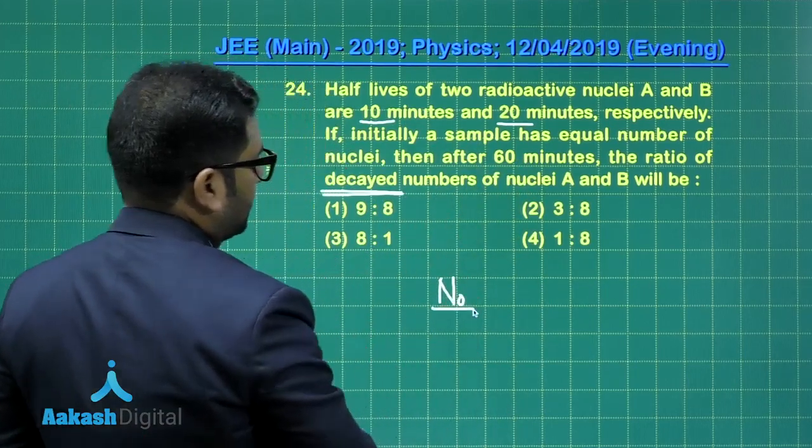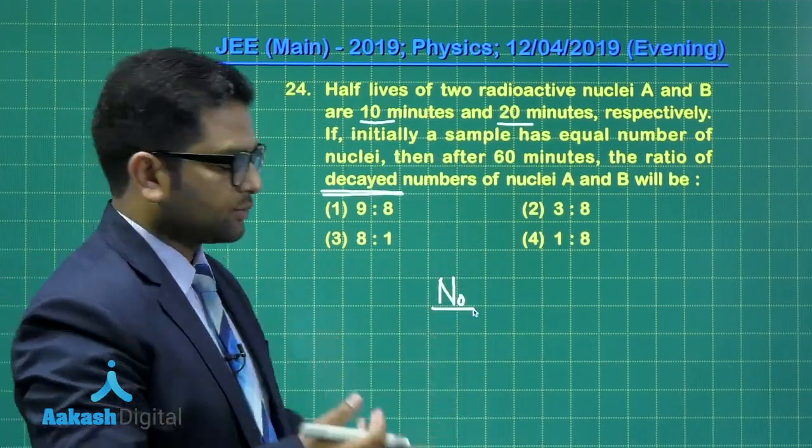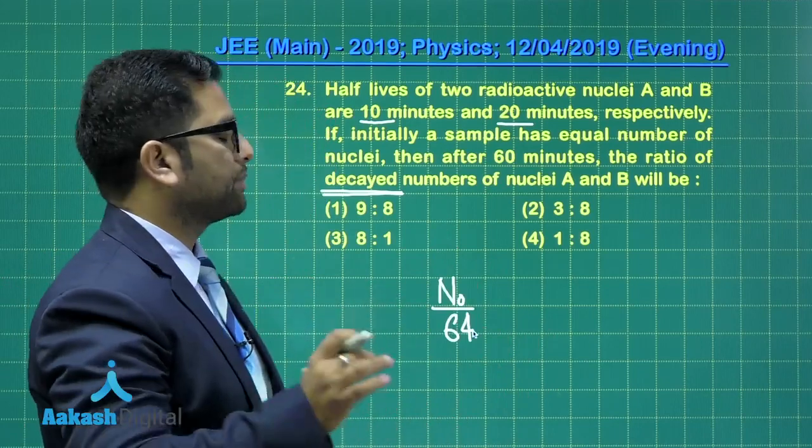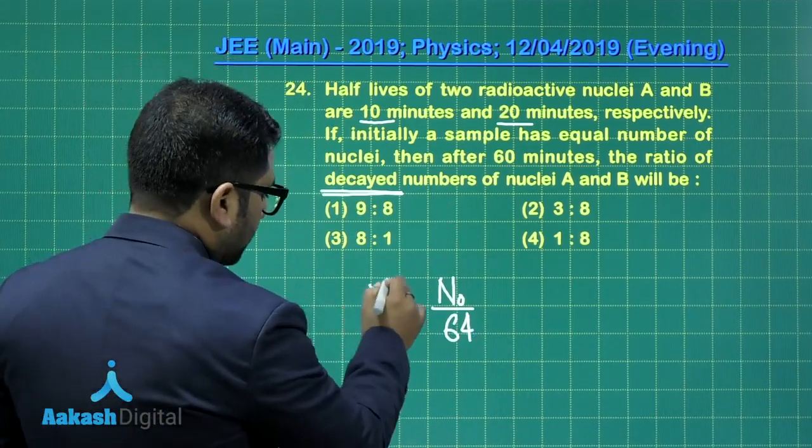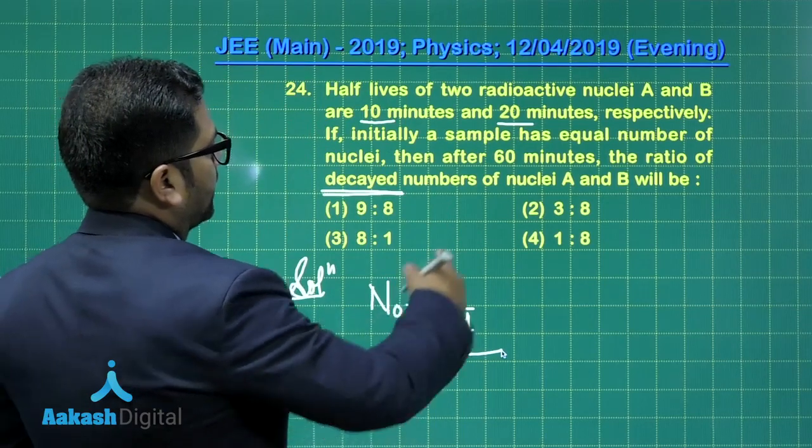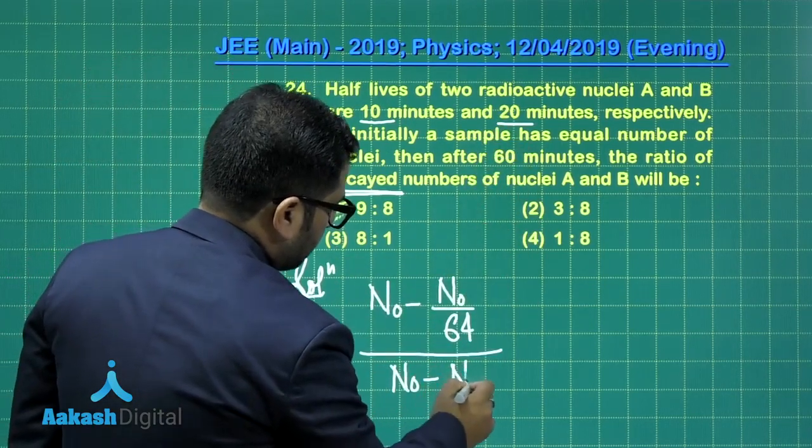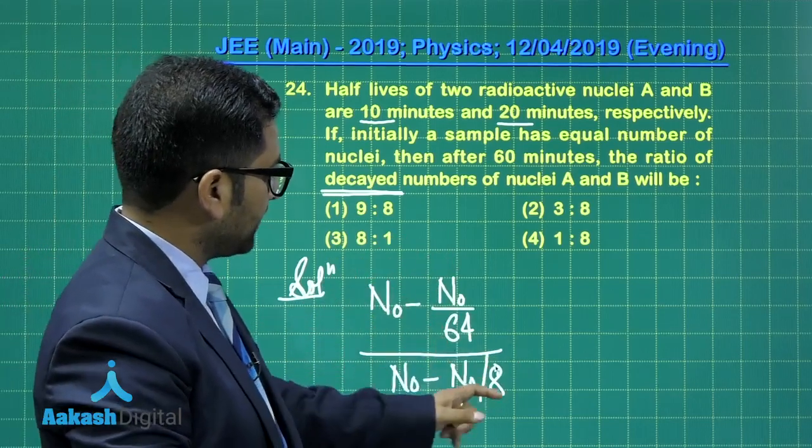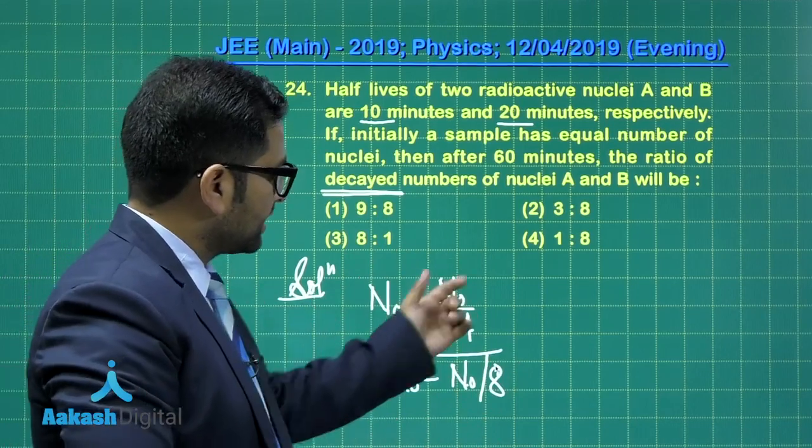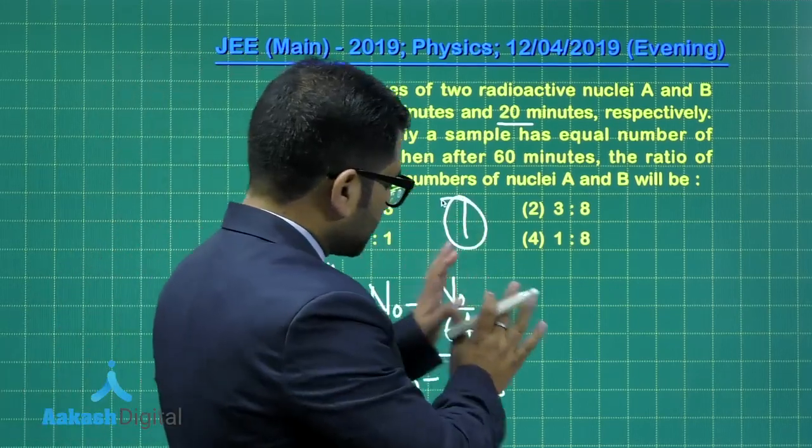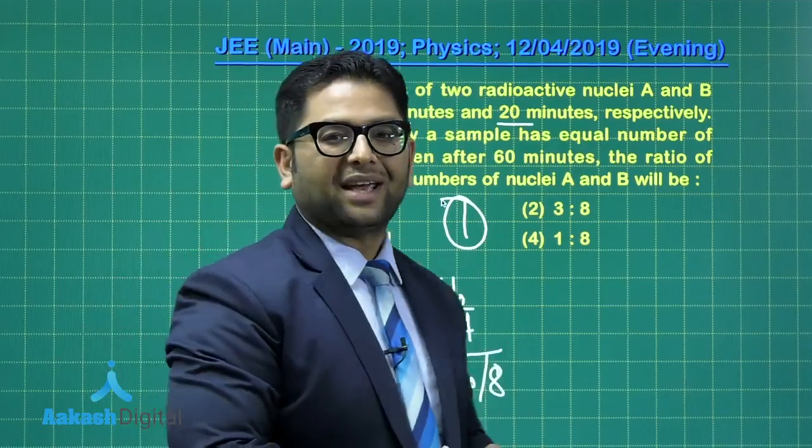So N0 by 64 would be the number of nuclei remaining for sample A after six half-lives. But we need the decayed one, so be very careful with this part. Similarly, for the second one, you see, three half-lives, so the decayed one is going to be this much. So there you need to be careful. Do not jump into early conclusion as N0 by 64, N0 by 8, and there's a question which is strictly kept. If someone does not do this, the option 1 is to 8 would be there. So that may trap you, and option number 1 is the correct one. So this question specifically demands presence of mind. Indeed, any examination, you need to have that presence of mind. Okay, let's go to the next question.